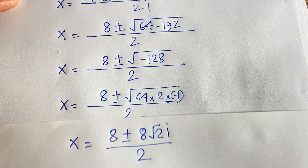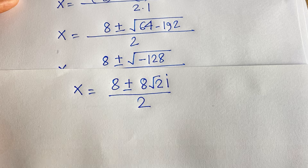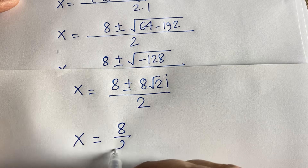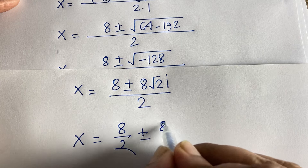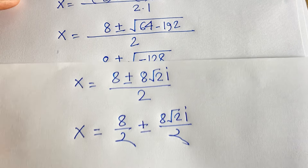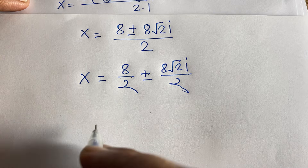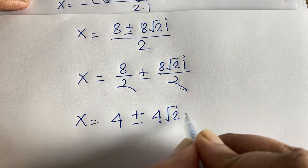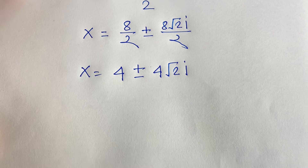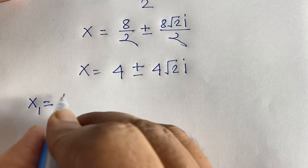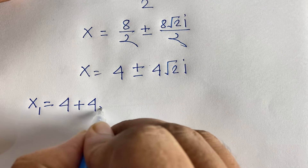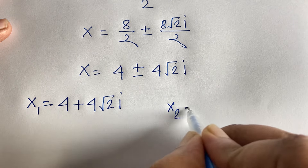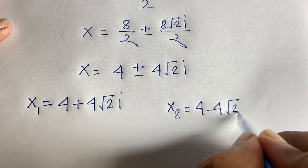So x equals 8 plus or minus 8√2·i, all over 2. Dividing each term by 2: x equals 4 plus or minus 4√2·i. Therefore x₁ equals 4 plus 4√2·i, and x₂ equals 4 minus 4√2·i.